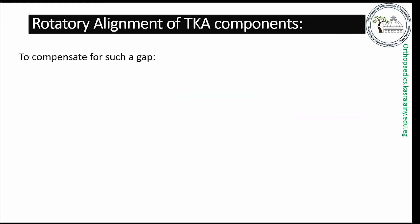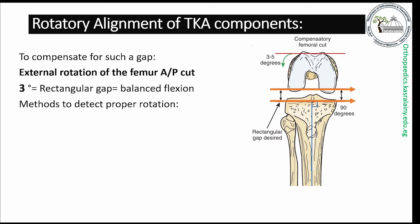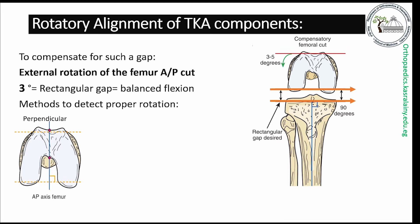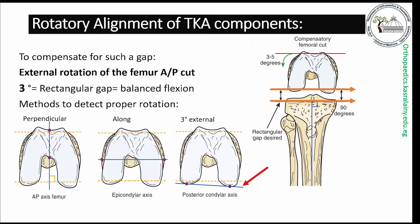To compensate for this gap, external rotation of the anteroposterior cut of the femur is made to allow for a rectangular, balanced gap. This external rotation is 3 degrees, corresponding to the native 3 degrees of varus of the knee. Methods to detect proper rotation include: perpendicular to the anteroposterior axis — Whiteside's line — along the epicondylar axis, or 3 degrees external rotation relative to the posterior condylar axis.